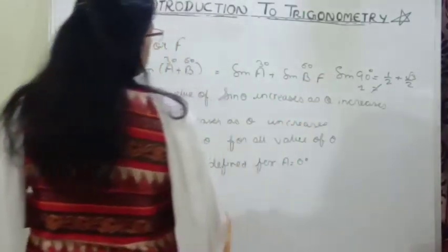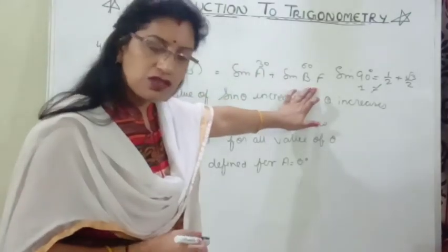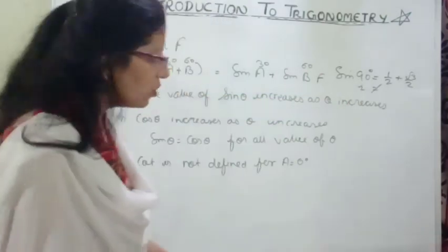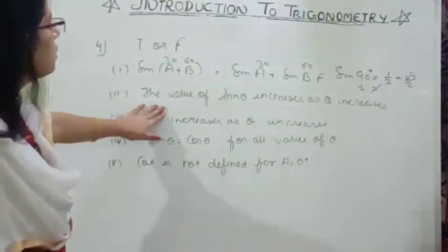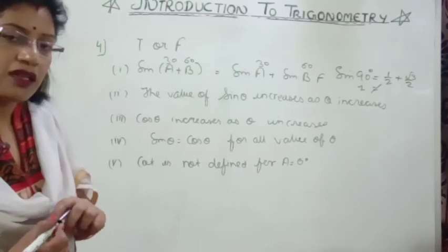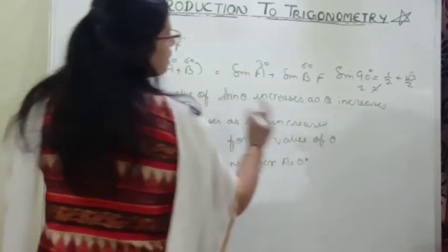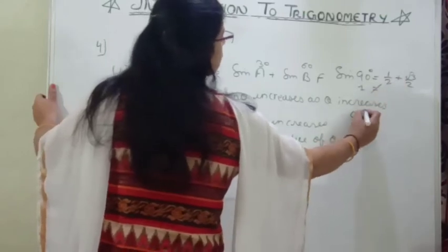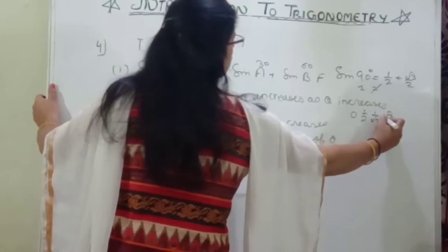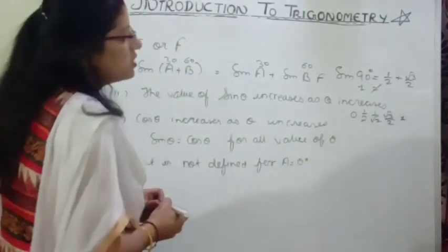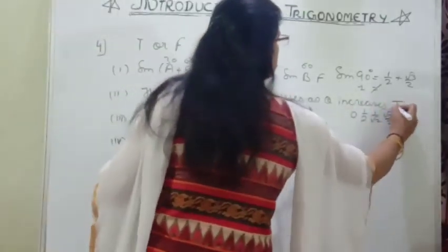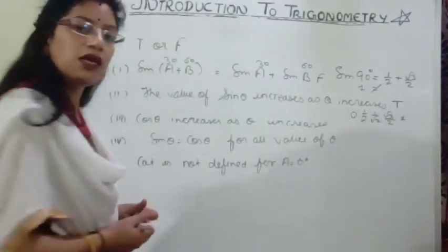The statement is false because if A = 30° and B = 60°, the left-hand side and right-hand side are not equal. Second part: the value of sin θ increases as θ increases. Sin 0° = 0, sin 30° = 1/2, sin 45° = 1/√2, sin 60° = √3/2, sin 90° = 1. It increases from 0 to 1, so this is true.